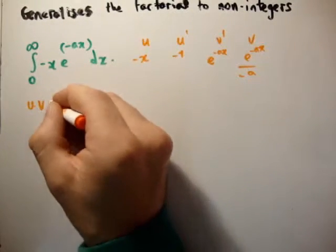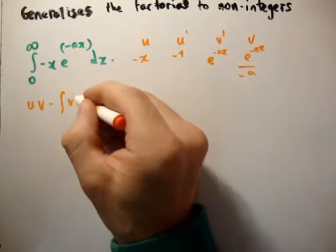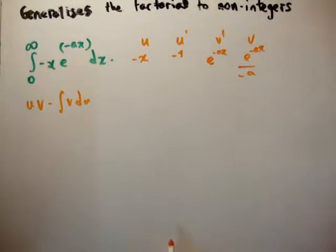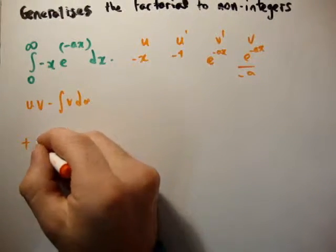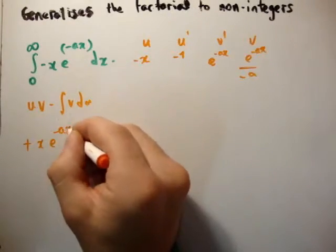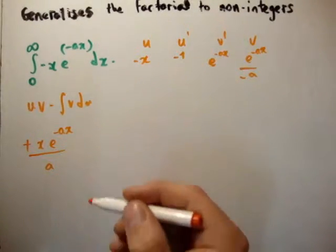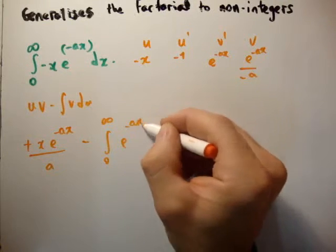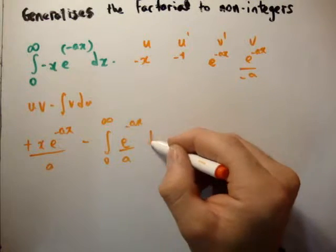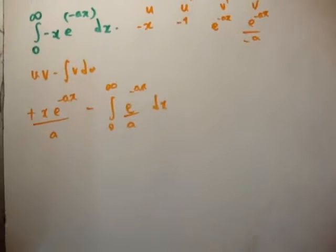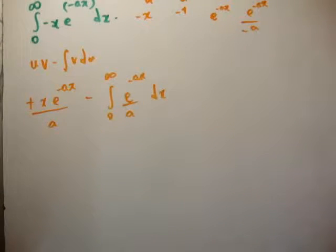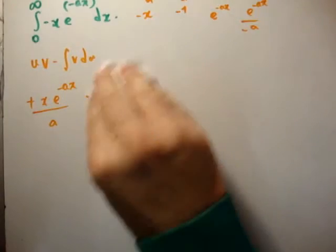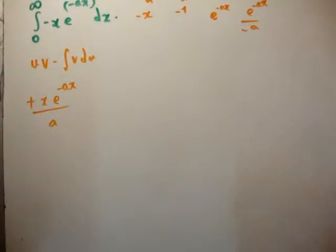Integration by parts is uv minus the integral of v du. So if you do that, you're going to get plus x times e to the minus ax over a, then negative the integral from 0 to infinity of e to the minus ax over a, dx. That's pretty straightforward.